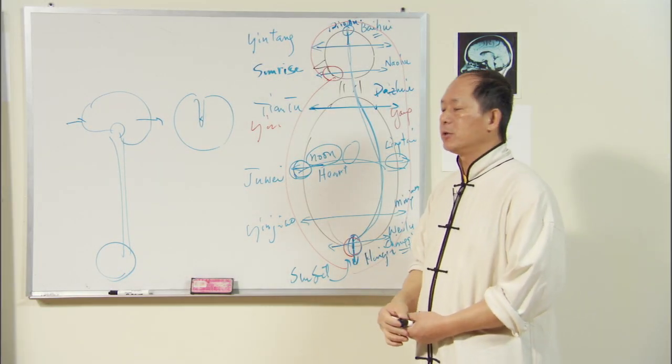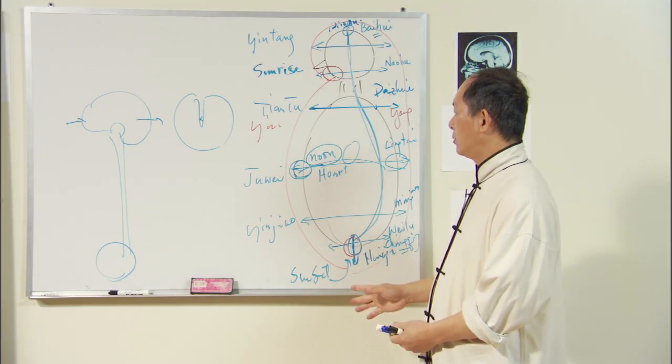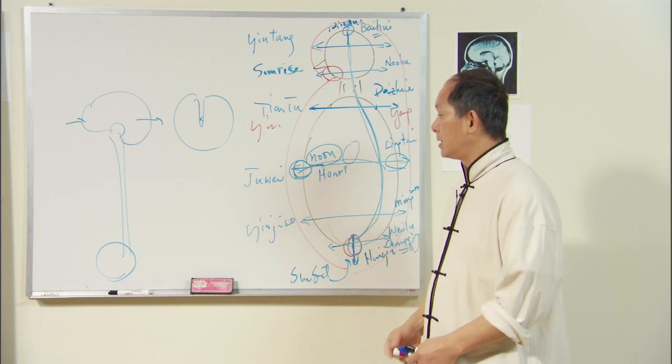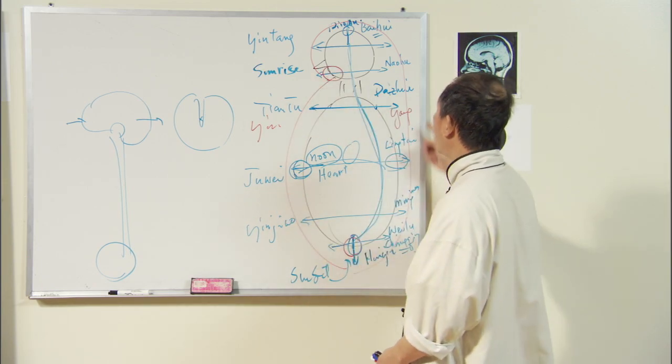Now, in a small circulation, what I want to do is build more quantity of qi through abdominal exercise. The second, I want to use your mind to lead the qi to pass through it.